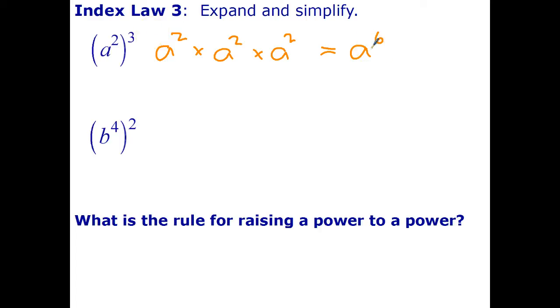Okay, you can probably guess what the index law is going to be, but let's go ahead and just confirm it. b to the power of 4 times b to the power of 4. Since we're squaring, we multiply b to the 4th by itself. To multiply powers with the same base, add the indices, and we get b to the power of 8.